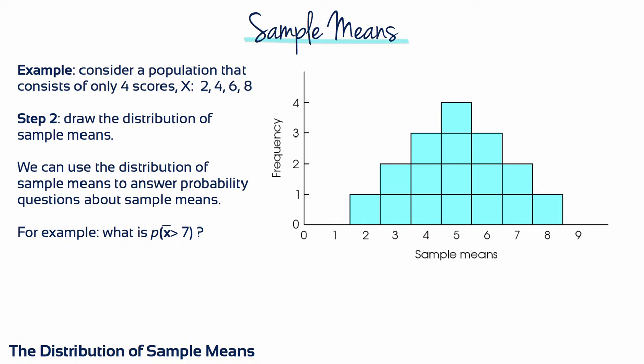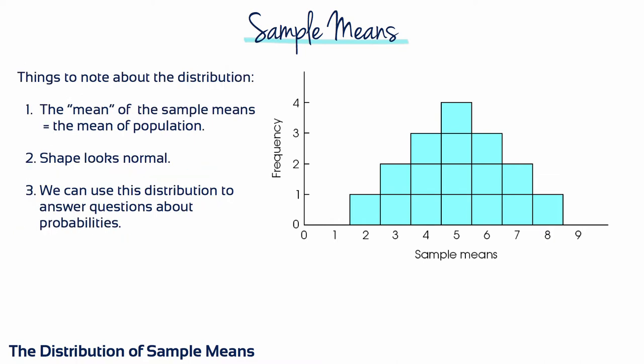This is the distribution of sample means, and we can use it to answer probability questions about samples. For example, what's the probability of obtaining a sample mean greater than 7? The mean of the sample means equals the mean of the population, the shape looks normal, and we can use this distribution to answer questions about probabilities.